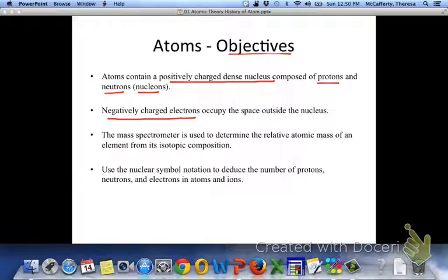Then we're going to take a brief look at a mass spectrometer. This is an instrument used to determine the relative atomic mass of an atom by giving you the relative abundance of each. Then you can determine the atomic mass from that isotopic composition. Lastly, we'll take a look at the nuclear symbol notation and how to deduce the number of protons, neutrons, and electrons in the isotopes of that atom and also in ions of that atom.